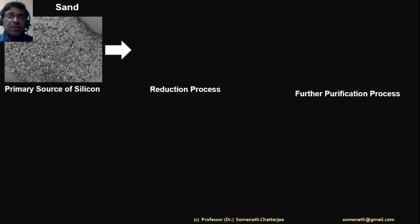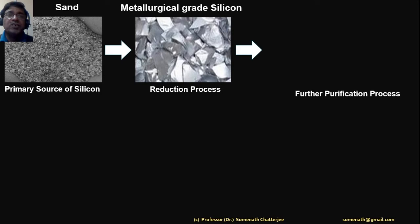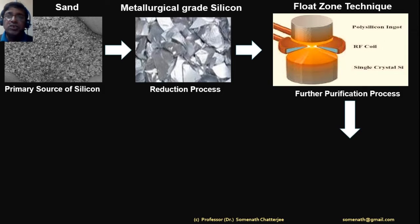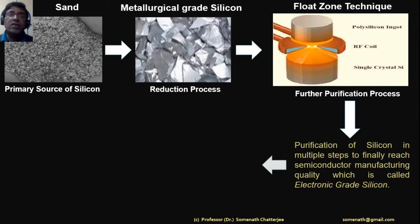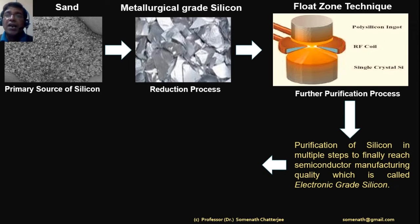After obtaining sand, we do a reduction process to isolate the oxygen from the silicon. We call this metallurgical grade silicon, and the purity is 98%. We cannot use this for our purpose, so we need another technique called the float zone technique, where the remaining impurities are isolated from the polysilicon.